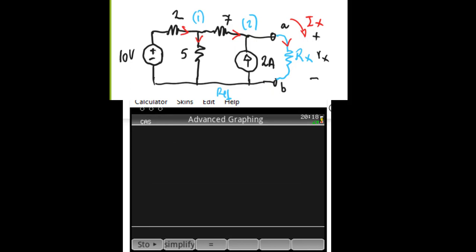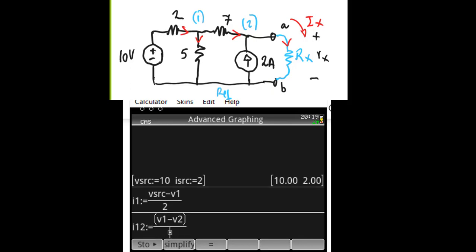Cast mode. And we begin with the definition. In this case, I say voltage source is 10. Current source is 2. Two definitions there. The current I1 is the V source minus the voltage V1 divided by 2. That is the definition.